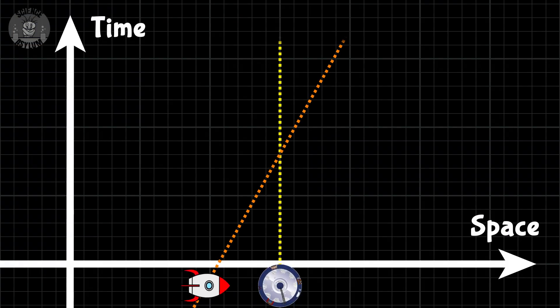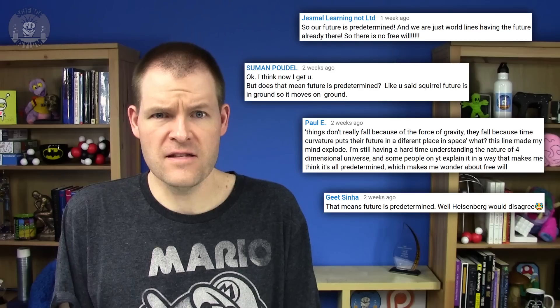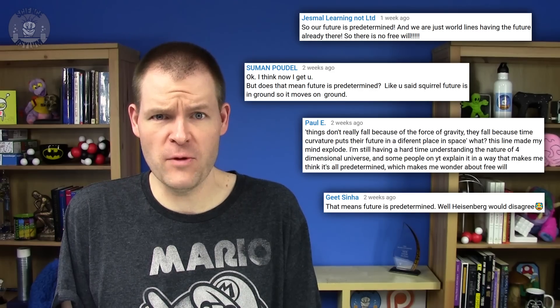Hey Crazies, we've been doing a lot with space-time diagrams lately, figuring out how different observers measure the passage of time. But that got several of you asking, does that mean the future is predetermined and we don't have free will?